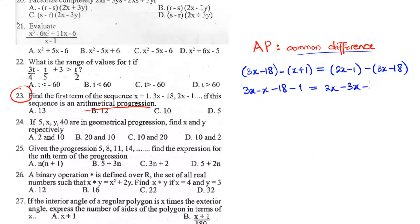After opening up the bracket, 3x minus x is 2x, minus 18 minus 1 is minus 19. 2x minus 3x is minus x, minus 1 plus 18 is 17. Taking x to the left-hand side, we have 2x plus x equals 17, then minus 19 goes to the right-hand side, that will be plus 19, giving us 3x equals 36.